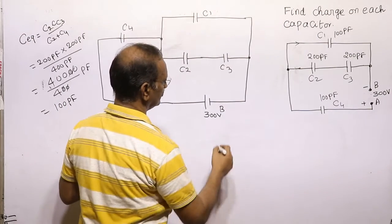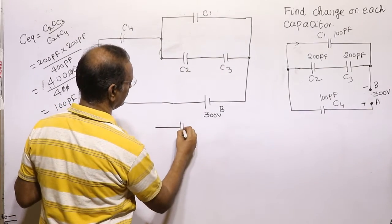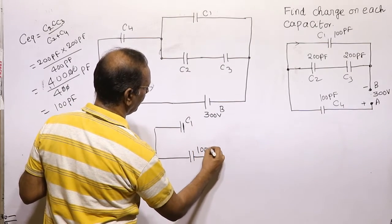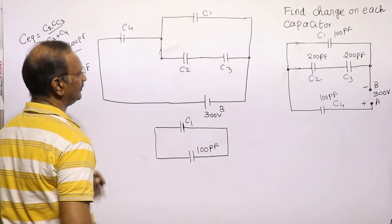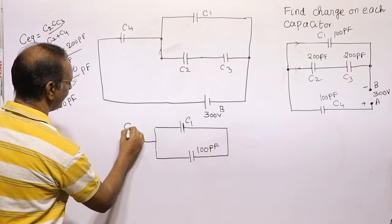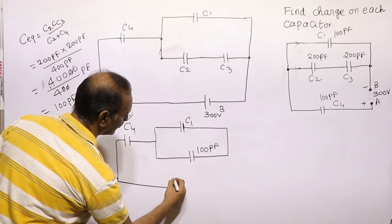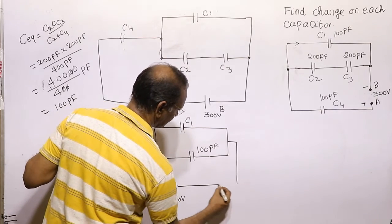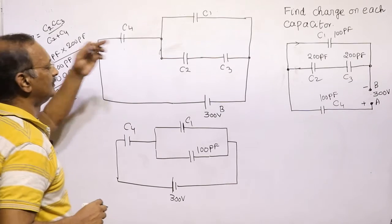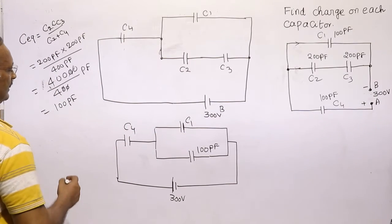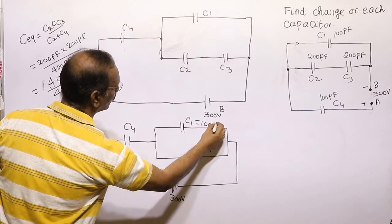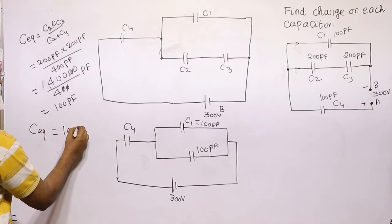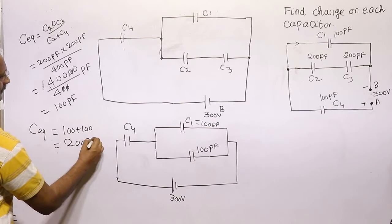Now we redraw the equivalent circuit. C1 is in parallel with the 100 picofarad equivalent of C2 and C3, and C4 is in series. C1 is equal to 100 picofarad. Since C1 and the C2-C3 equivalent are in parallel, C_parallel = 100 + 100 = 200 picofarad.